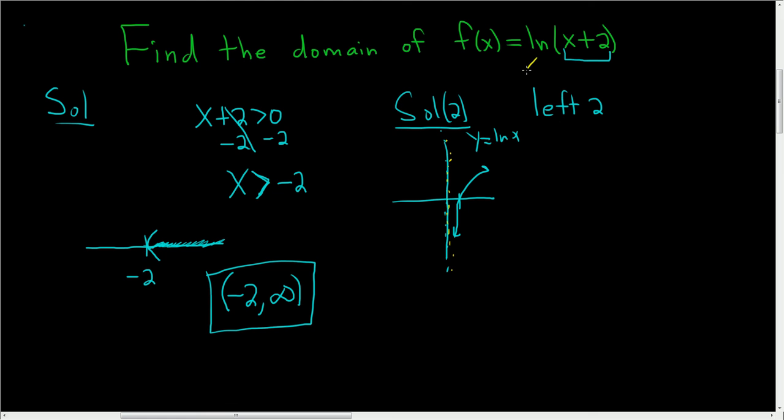So this is the graph of the natural log of x shifted to the left by 2. So we just take this picture and shift it to the left by 2. So 1, 2, and then we draw our vertical asymptote. And it looks something like that.